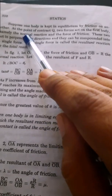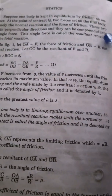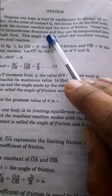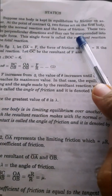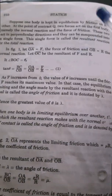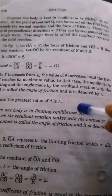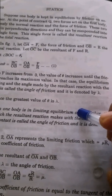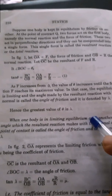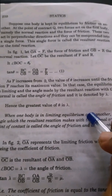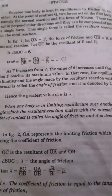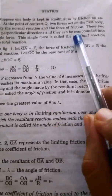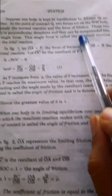At the point of contact, the two forces act on the first body — namely, the normal reaction and the force of friction. At the point of contact, the two bodies are kept in equilibrium. At the point of contact, the two forces act on the first body: the normal reaction and the force of friction.